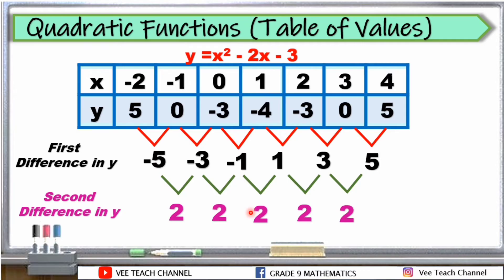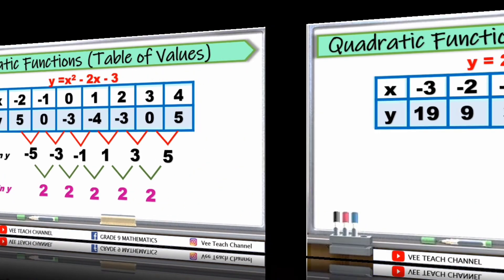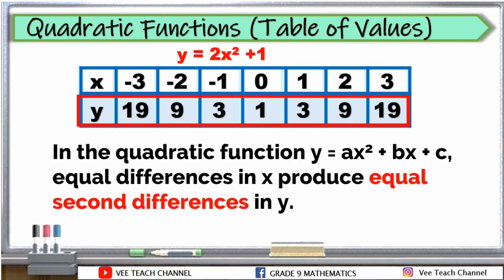Yung second difference ng y natin is 2, and they are all the same. Kapag nakakita tayo ng table of values na equal yung second differences ng y natin, we can say that the table of values is a quadratic function. Kaya after nating makita yung x, mahalaga na tignan natin yung y values natin. In the quadratic function y is equal to ax squared plus bx plus c, equal differences in x produce equal second differences in y. Kailangan din yung x natin ay equal yung first difference, tapos yung kanyang y, dapat equal yung kanilang mga second differences. Pag ganon yung ating table of values, kahit hindi pa natin nakikita yung equation, sa pagtingin pa lang sa table of values malalaman na natin na quadratic function siya.